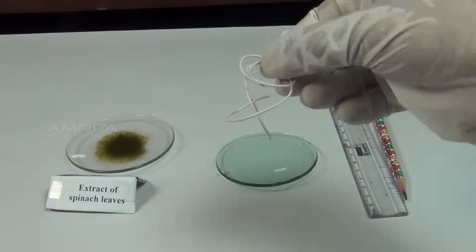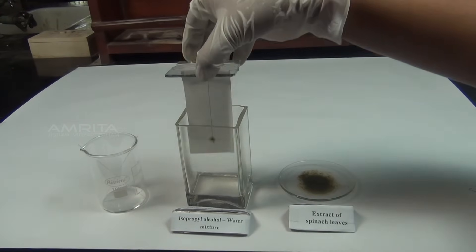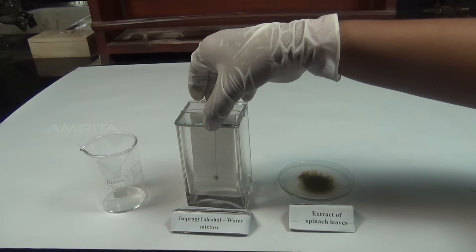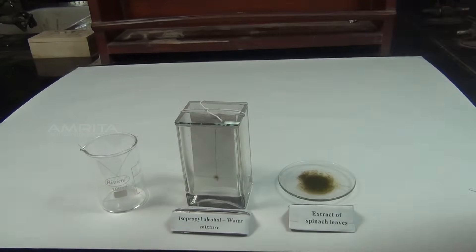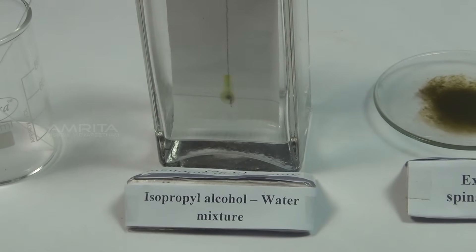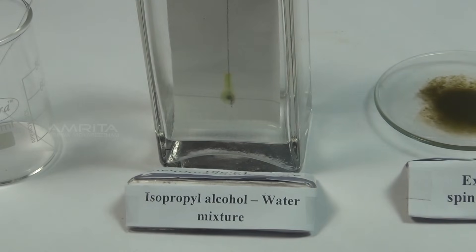Take a piece of thread and tie the filter paper with it. Suspend the filter paper vertically in the chromatographic chamber containing solvent, which is a mixture of isopropyl alcohol and distilled water. Make sure that the pencil line remains about 1 cm above the solvent level. Keep the chamber undisturbed for some time.